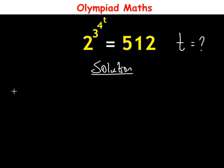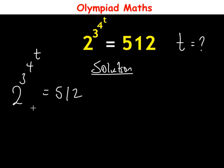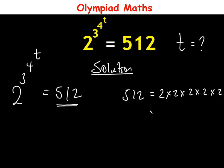The question is 2 raised to power 3 raised to power 4 raised to power t is equal to 512. This is an exponential equation. We can express 512 as 2 times 2 times 2 times 2 times 2 times 2 times 2 times 2 times 2.